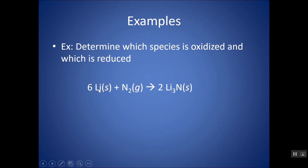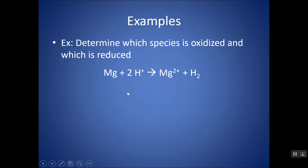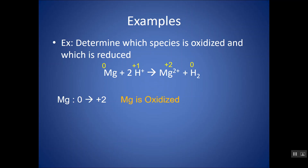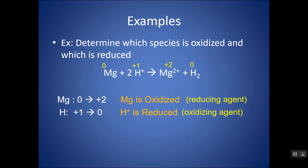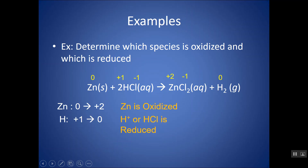For Li + N2 → Li3N: Li by itself is 0, N by itself is 0. In Li3N, N is minus three and Li is plus one. Li is going up — it's oxidized, or the reducing agent. N is going down — it's reduced, or the oxidizing agent. For the net ionic Mg + 2H⁺ → Mg²⁺ + H2: Mg by itself is 0, H⁺ is +1, Mg²⁺ is +2, H2 is 0. Mg is going up — oxidized, or the reducing agent. H⁺ is going down — reduced, or the oxidizing agent. For Zn + 2HCl → ZnCl2 + H2: Zn is 0, H is +1, Cl is −1. Products: Zn is +2, Cl is −1, H is 0. Zinc is going up — oxidized. Hydrogen is going down — reduced.